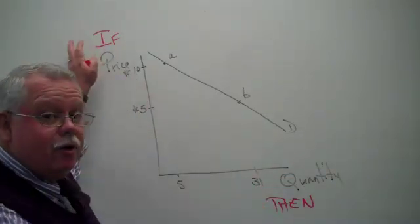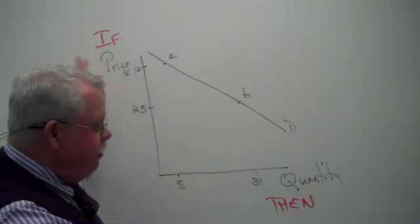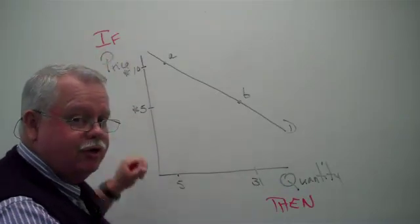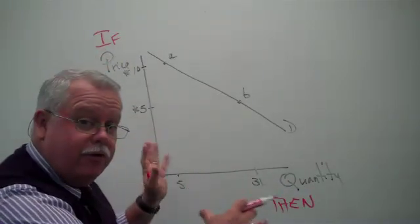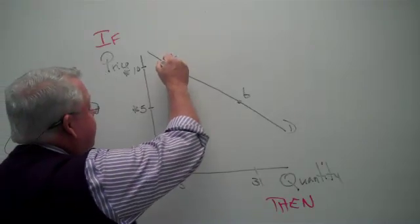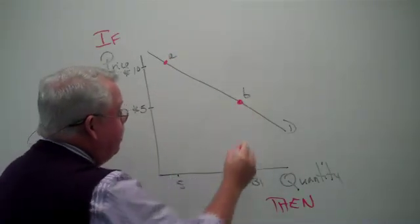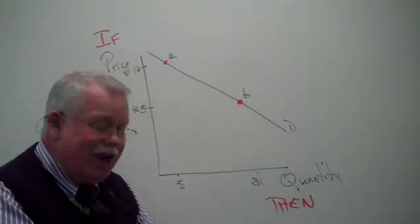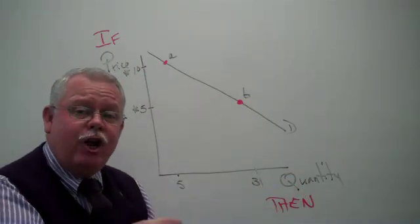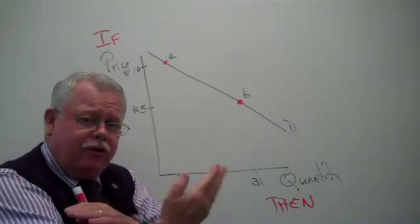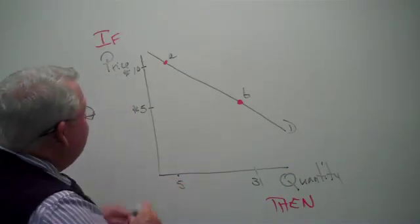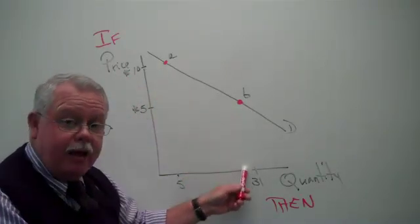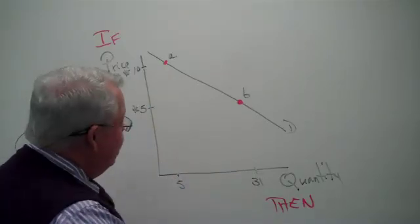This is called the independent variable - it changes first. And this is the dependent variable - it becomes whatever value based on what this one does. Now, if you go from this point to this point along the demand curve, you're moving along the demand curve. We do not call that a change in demand.